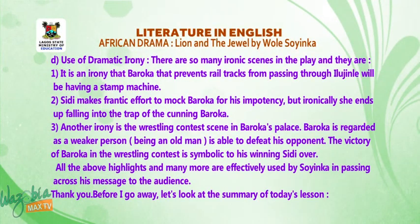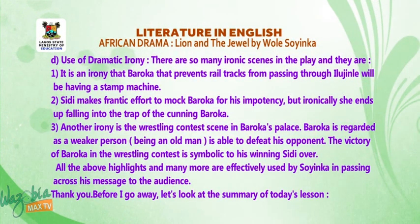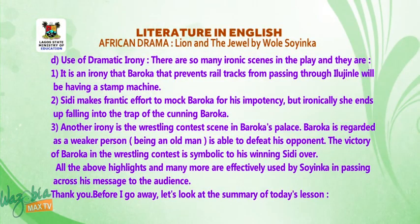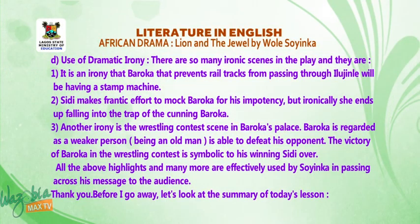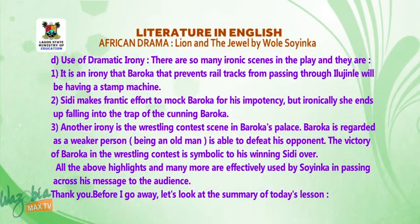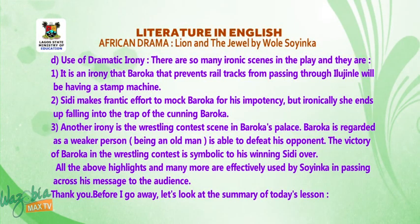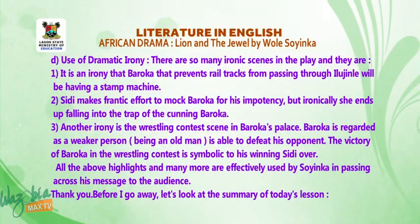Another stylistic device is the use of dramatic irony. There are many ironic scenes in the play. Number one, it is ironic that Baroka, who prevented rail tracks from passing through Ilujinle, would be having a postage stamp machine. Another example: Sidi makes a frantic effort to mock Baroka for his impotency, but ironically ends up falling into the trap of the cunning Baroka. Another irony is the wrestling contest scene in Baroka's palace — Baroka, regarded as weaker being an old man, is able to defeat his opponents, and his victory is symbolic of his winning over Sidi. All the above highlighted devices and many more are effectively used by Soyinka in passing his message to the audience.